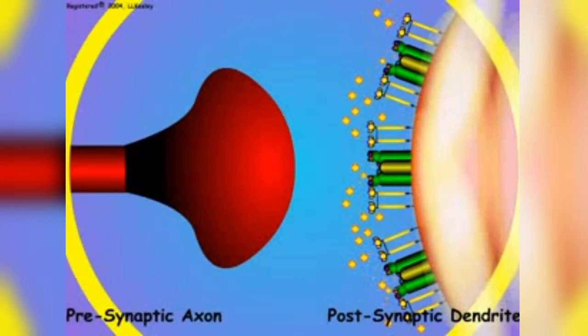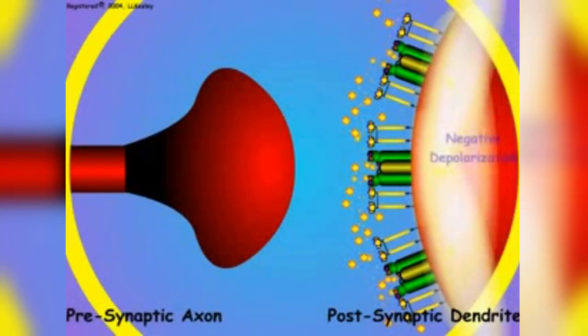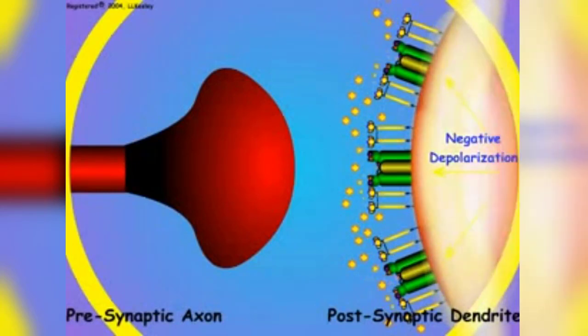Transfer of the sodium ions to the inside of the postsynaptic membrane results in the outside of the postsynaptic membrane becoming negatively charged in the region of the open sodium channels.